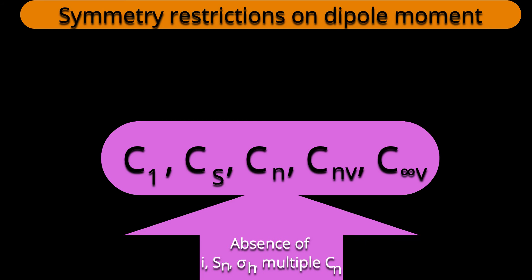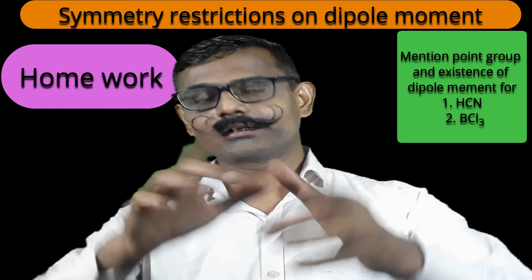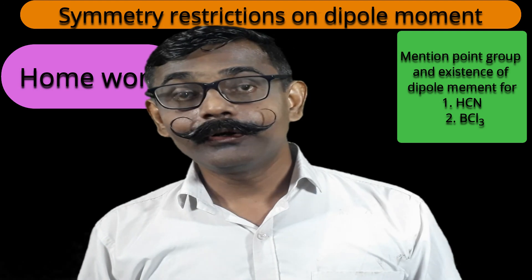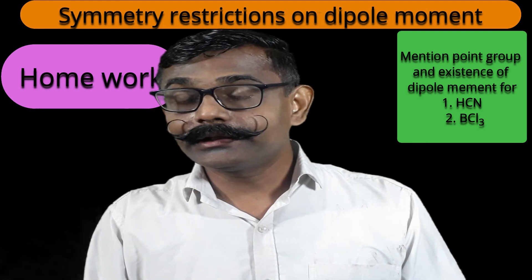These are the point groups where a center of inversion is absent — which is a killing factor for dipole moment. There should be no improper axis of rotation (Sn), which is also a killing factor. An axis has one direction and a plane has another — multiple directions are not allowed. So if Sn is present, no dipole moment; if σh is present, no dipole moment; if multiple axes are present, no dipole moment.